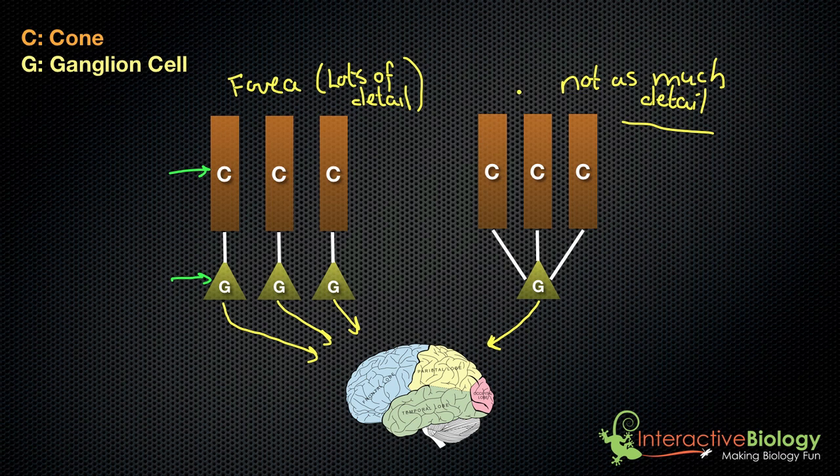This receptive field is larger because it's connected to more cones, but you get less detail. The receptive field here is smaller, but because you have so many individual ganglion cells that are connected to individual cones and individual rods, that's going to give you more detail.